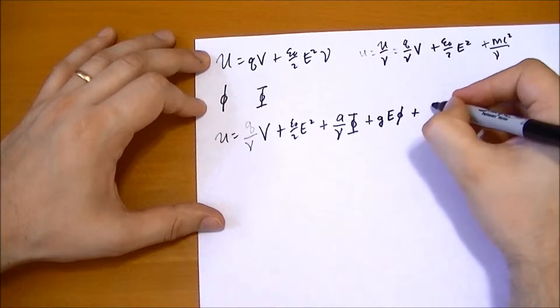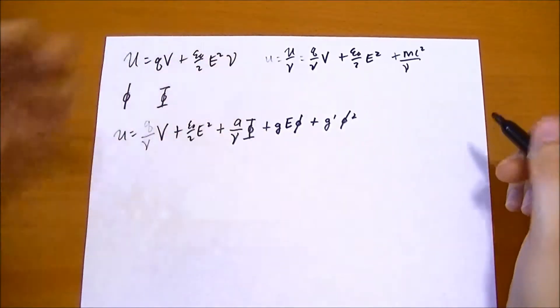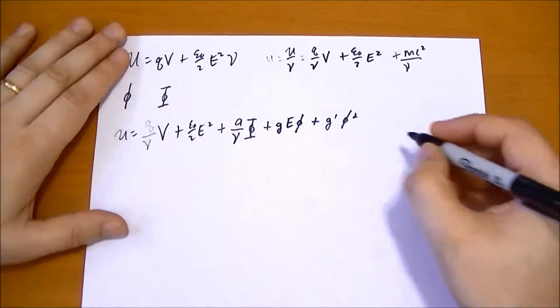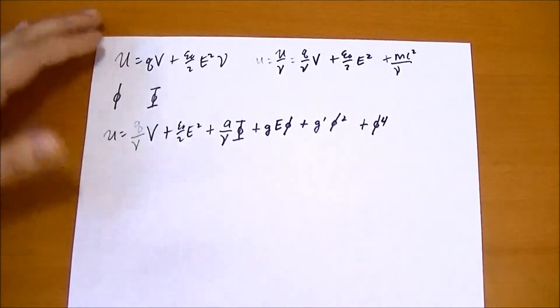The field is also going to interact with itself with some g prime. And for reasons that won't really make everything clear, we're going to introduce a new term, phi to the 4th. If we don't introduce this term, then things will get weird.